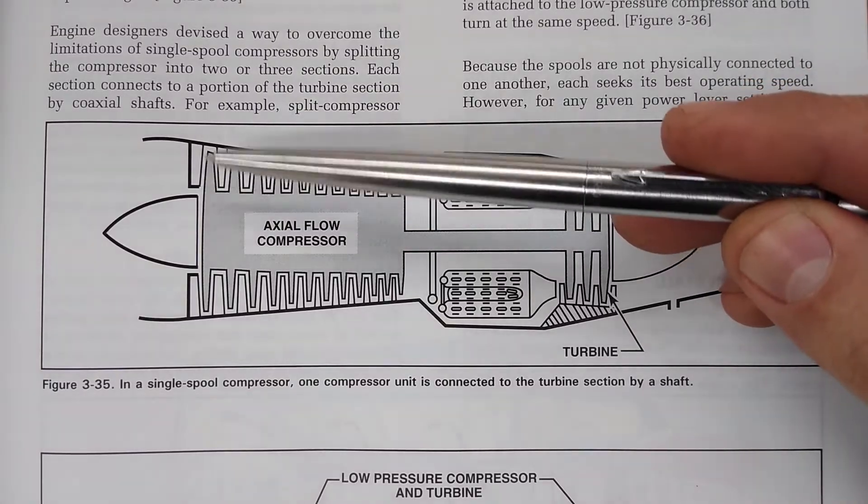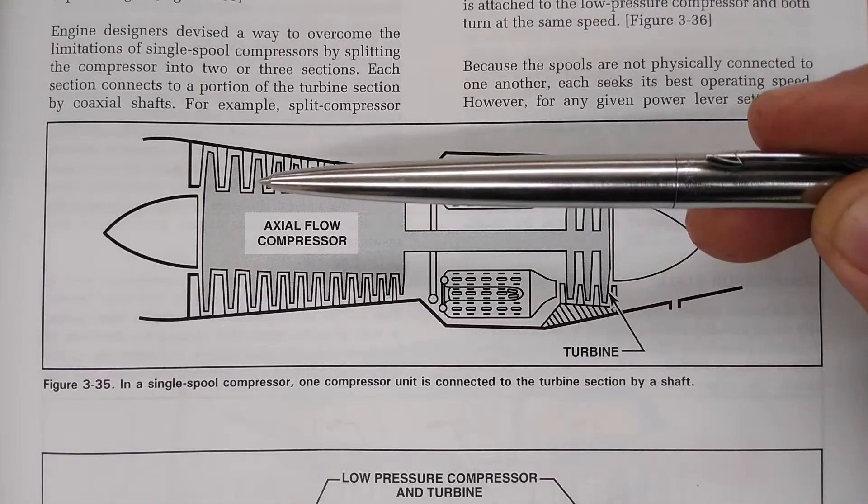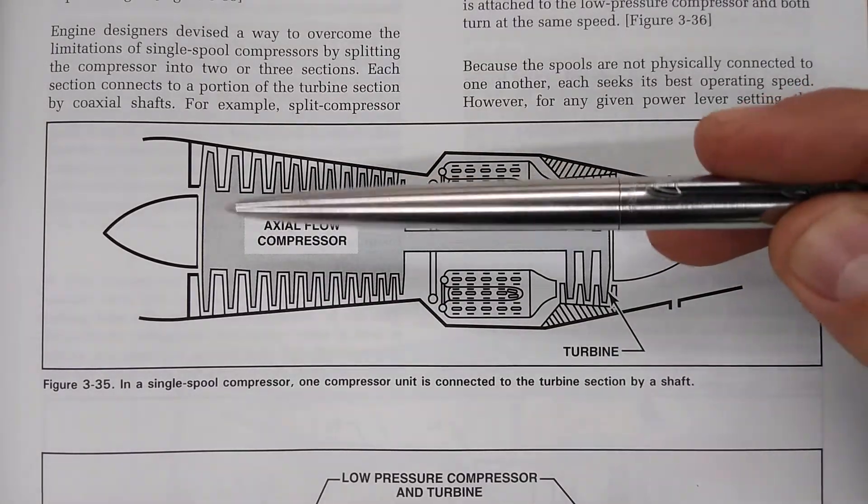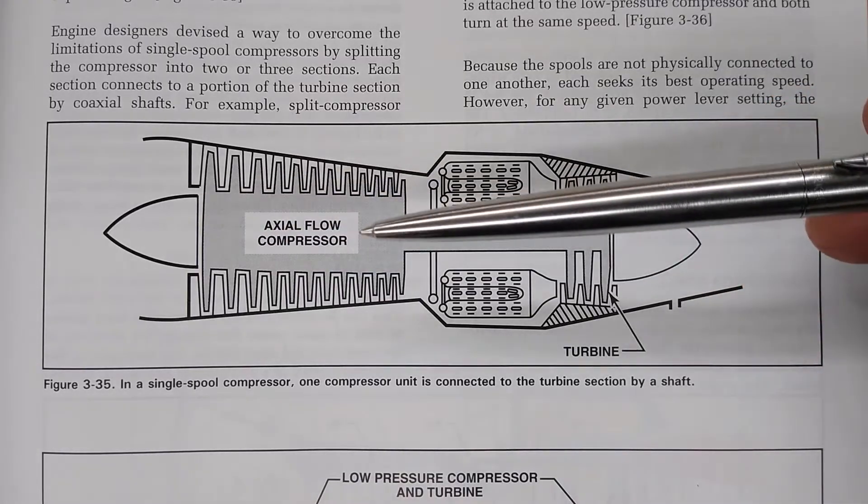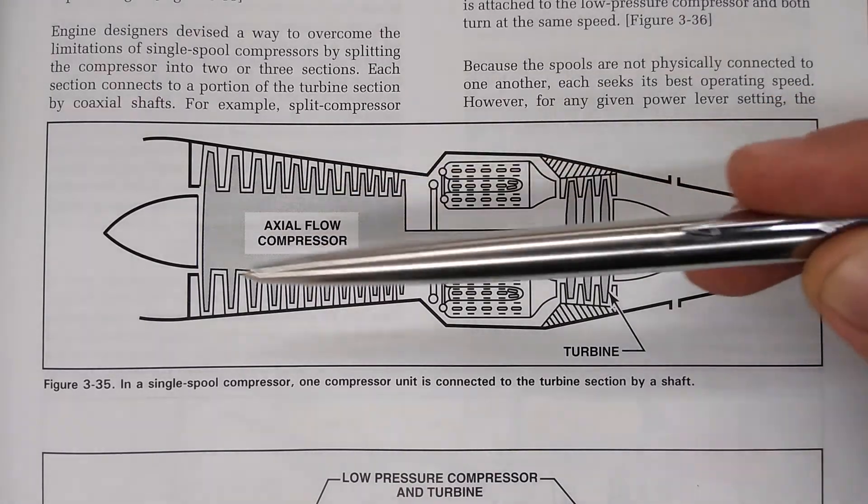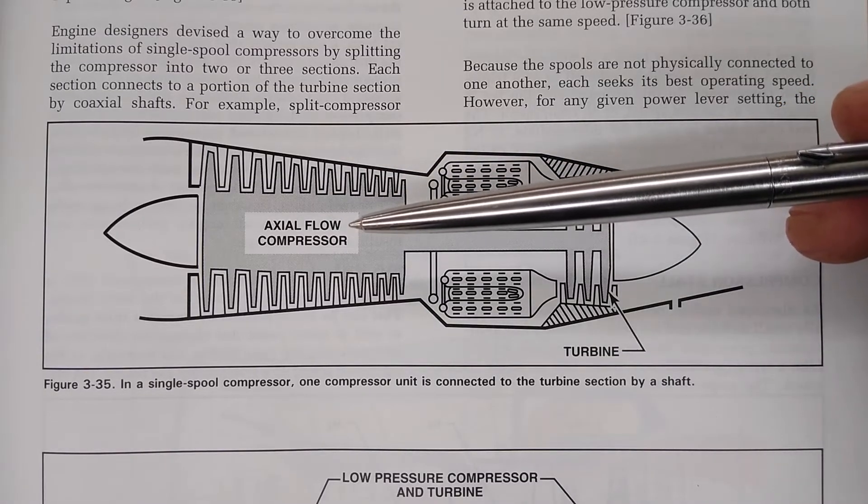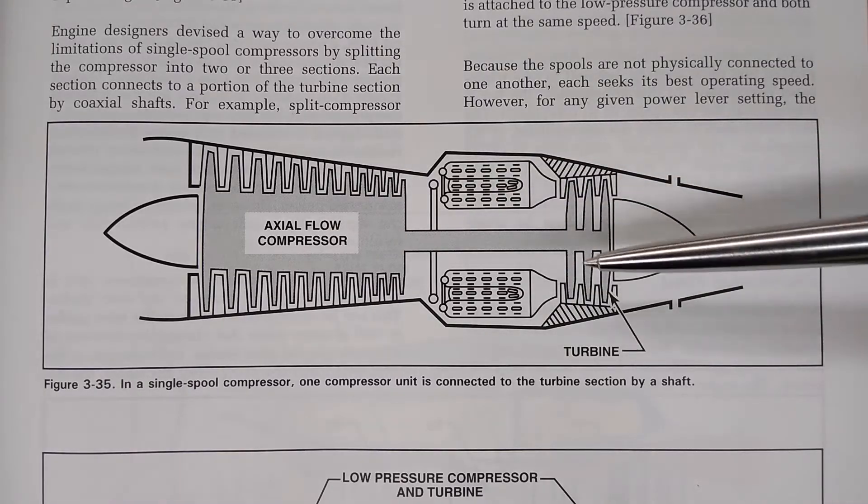Obviously there's lower pressure here in the beginning, higher pressure here, but this is not referred to as low pressure and high pressure compressors. This is still one single compressor, one single spool, everything rotating all together as one assembly.